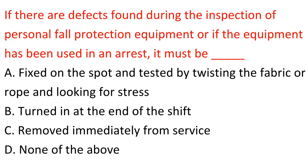Question: If there are defects found during the inspection of personal fall protection equipment, or if the equipment has been used in an arrest, it must be dash. A. Fixed on the spot and tested by twisting the fabric or rope and looking for stress. B. Turned in at the end of the shift. C. Removed immediately from service. D. None of the above. Answer: C. Removed immediately from service.